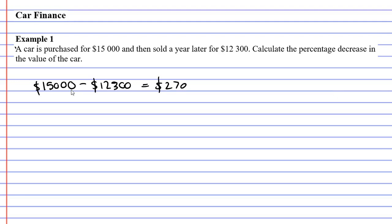So it's gone down in value by $2,700. Now our formula is amount over total times 100. So we know the amount at the top is $2,700. The total is the one that confuses people. Is the total going to be the $15,000 or the $12,300?